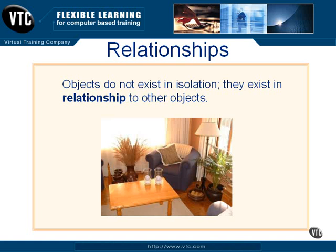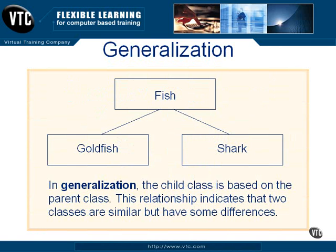For example, the coffee table is a kind of table. That 'is a kind of' relationship is an example of a generalization. In generalization, the child class is based on the parent class. Here we have a parent class of fish and two child classes — goldfish and shark. Each of those child classes inherits the attributes and operations of the parent class, so whatever defines a fish in terms of its properties and what it can do also defines a goldfish and a shark.